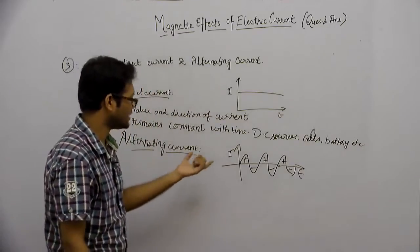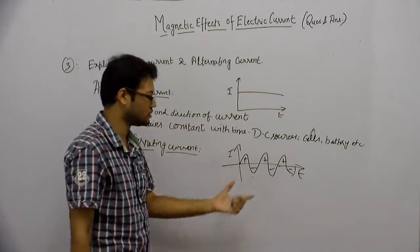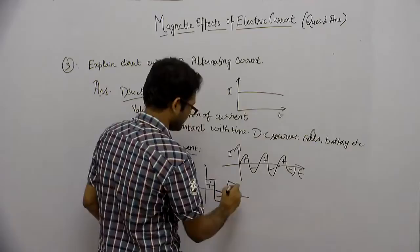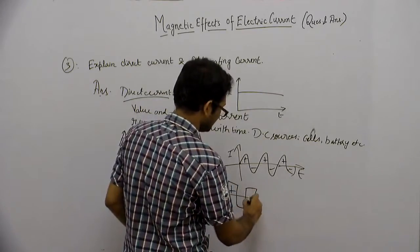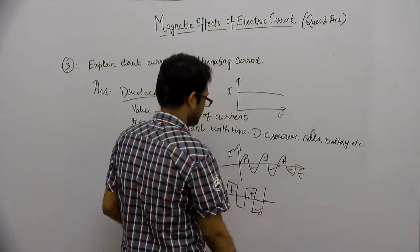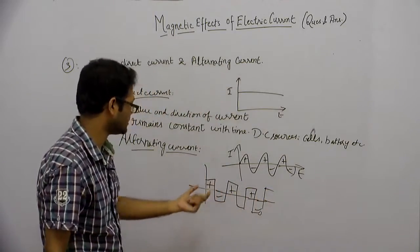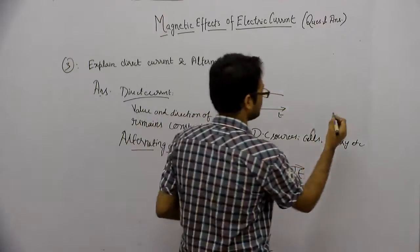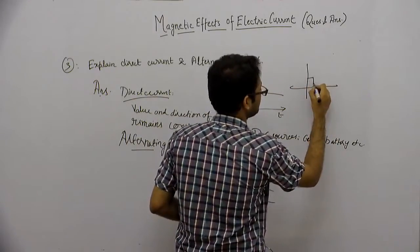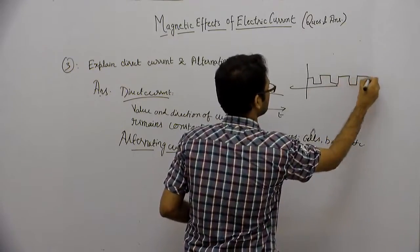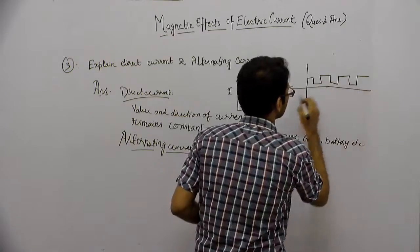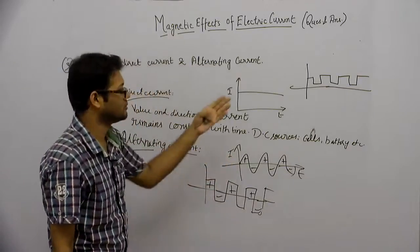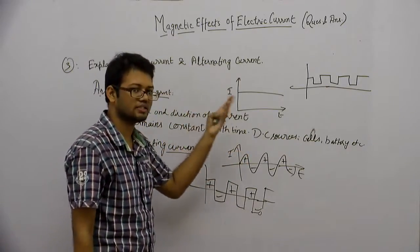तो यह था आपका alternating current। Alternating current जरूरी नहीं है कि हर बार sinusoidal change हो रही है। But अगर आपको कोई दे दे कि यह alternating current है क्या — तो इसके बारे में हम क्या कहेंगे?